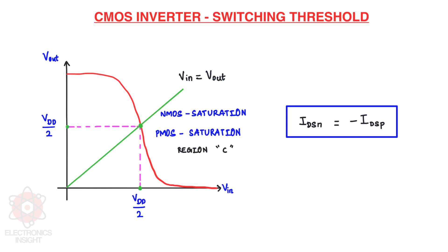Now comes the main discussion: we will first discuss the switching threshold and then proceed to the beta ratio effects. The graph shows only region C, the transition region, which is important for switching between high-to-low or low-to-high. The switching threshold is exactly VDD/2 for the input value. When VIN equals VDD/2, VOUT is also VDD/2, and both NMOS and PMOS are in saturation. When both are in saturation, VIN equals VOUT — this point is the transition region, and we derive the switching threshold from the current equations of both NMOS and PMOS.